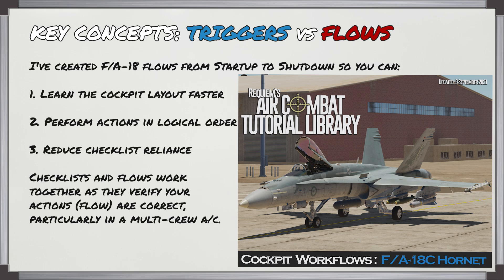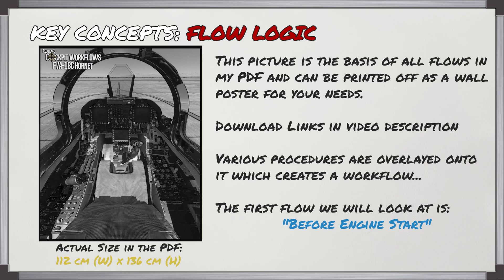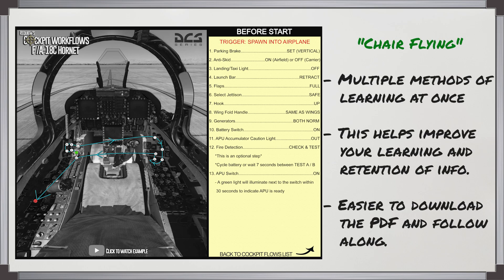This is particularly important in multi-crew aircraft. The flow logic picture shown here is the basis of all the flows in the PDF — you can print it off as a wall poster if you want, as it's quite large. The download link is in the description. We've overlaid the various procedures onto it to create the workflow. These flows are learned by repetition: sit in the chair with your eyes closed, visualize the flows moving around the cockpit, and reach out to where the various switches are. This is called chair flying and uses multiple learning methods to improve retention. I recommend downloading the PDF and following along before watching the rest of the video.